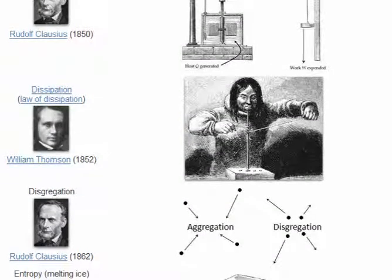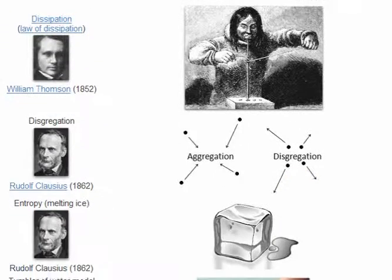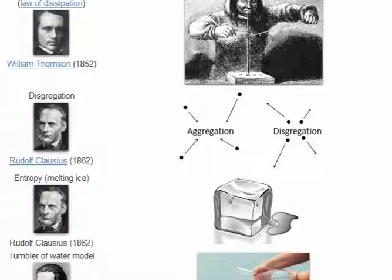In 1862, Clausius added to his entropy theory that entropy was a measure of disaggregation of the particles of a body, whereby if heat was taken away from a body, particles would aggregate, and if heat was added to a body, particles would disaggregate, or spread apart. In 1862, Clausius explained entropy in terms of ice melting.